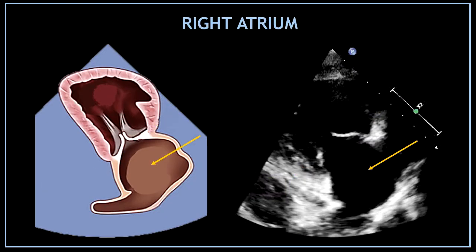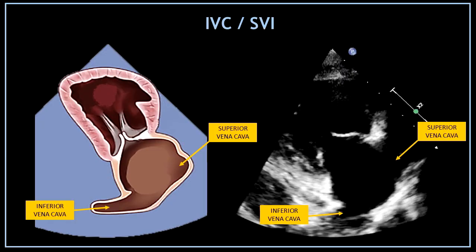The next big echo-free space under the tricuspid valve corresponds to the right atrium. At the bottom of the screen you can see two lines entering the right atrium on each side. The small black line on the left corresponds to the inferior vena cava, and the one on the right hand side corresponds to the superior vena cava.